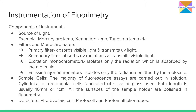Coming to filters and monochromators: there are two types of filters — the primary filter and the secondary filter. They have different jobs. The primary filter absorbs visible radiation and transmits only ultraviolet radiation. The secondary filter absorbs ultraviolet radiation and transmits visible radiation. So the jobs of the primary and secondary filters are exactly opposite to each other.